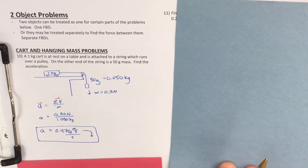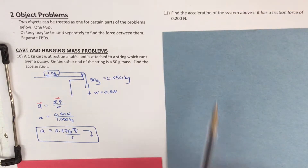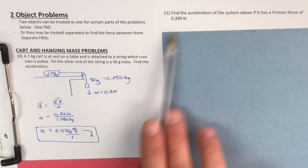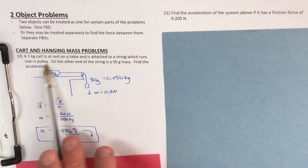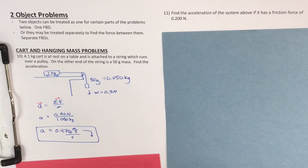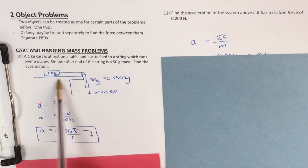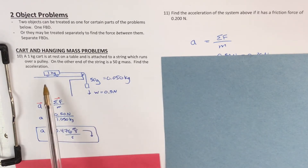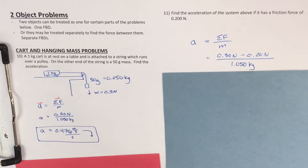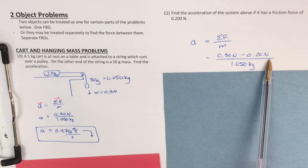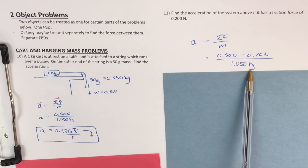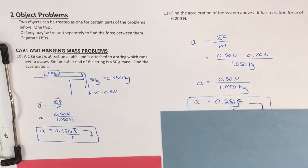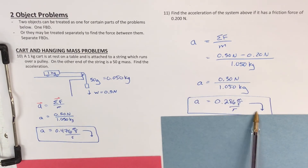Find the acceleration of the system if it has a friction force of 0.2 newtons. Friction force is applied backward on the cart. Weight forward is 0.5 newtons minus 0.2 newtons friction backward, divided by the same total mass of 1.050 kilograms, giving acceleration of 0.286 meters per second squared. Remember that surface friction force equals the coefficient of friction times the normal force.